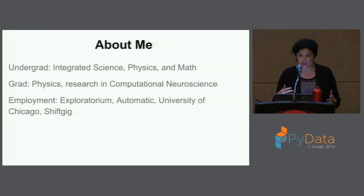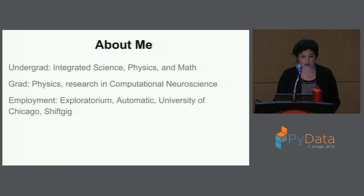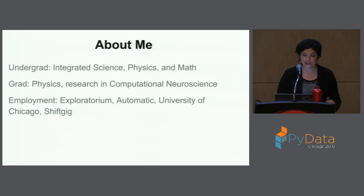A little bit about me. My background is in integrated science, physics, and math. I went to grad school for physics but did research in computational neuroscience, and at grad school I was exposed to a lot of machine learning techniques. After graduating, I've worked in science education at a few tech companies, and currently I'm a data scientist at ShiftGIG. If you want to hear more about ShiftGIG, you should come to my other talk on Sunday.